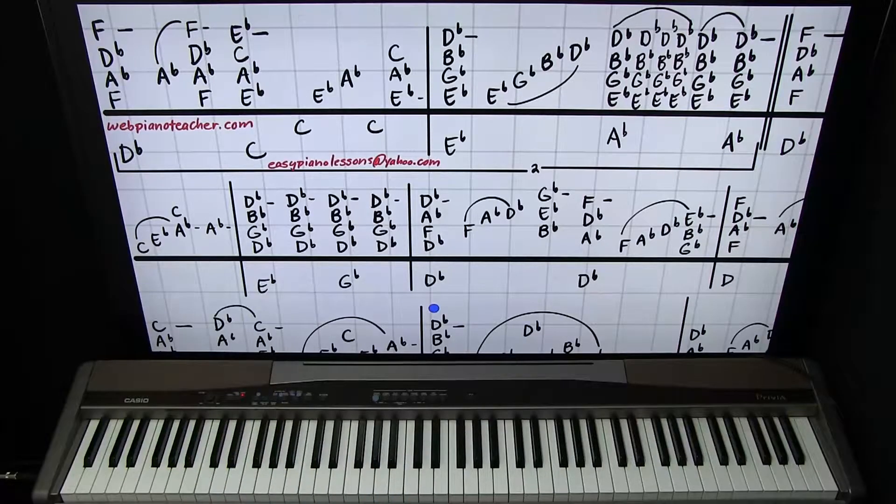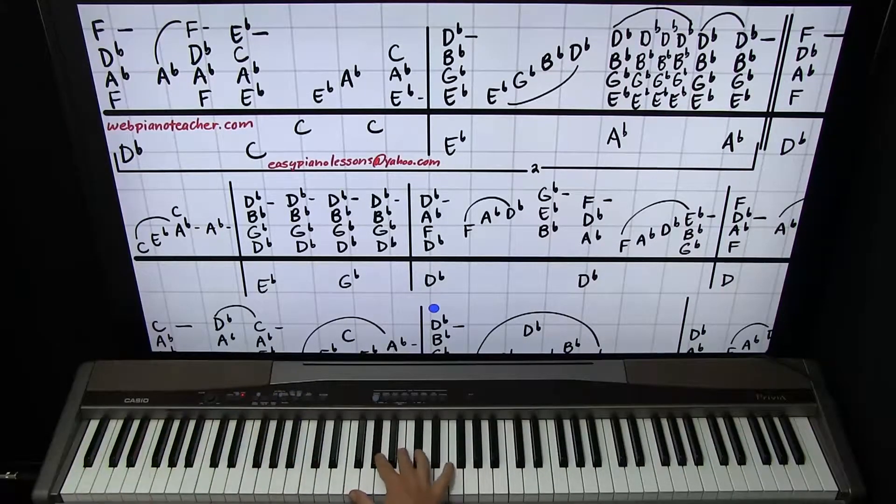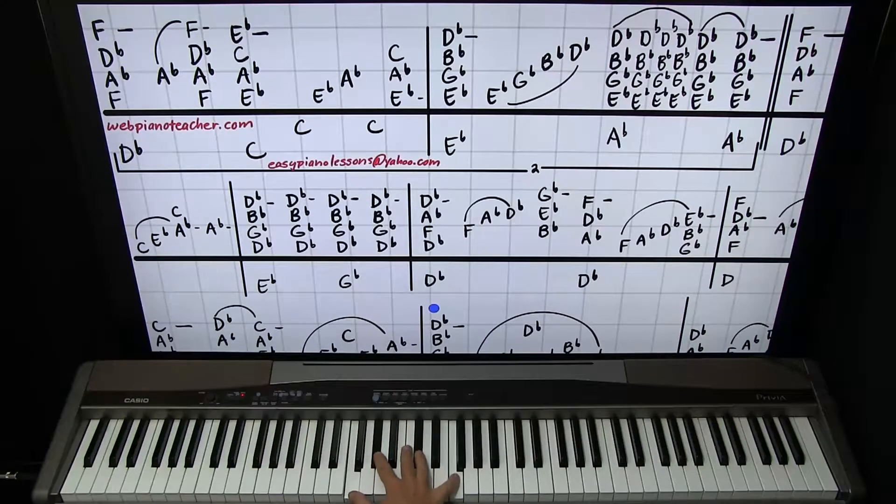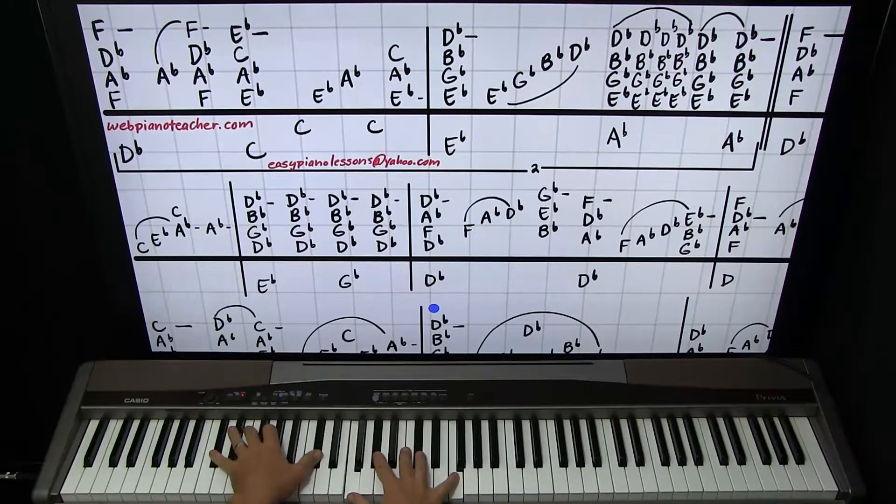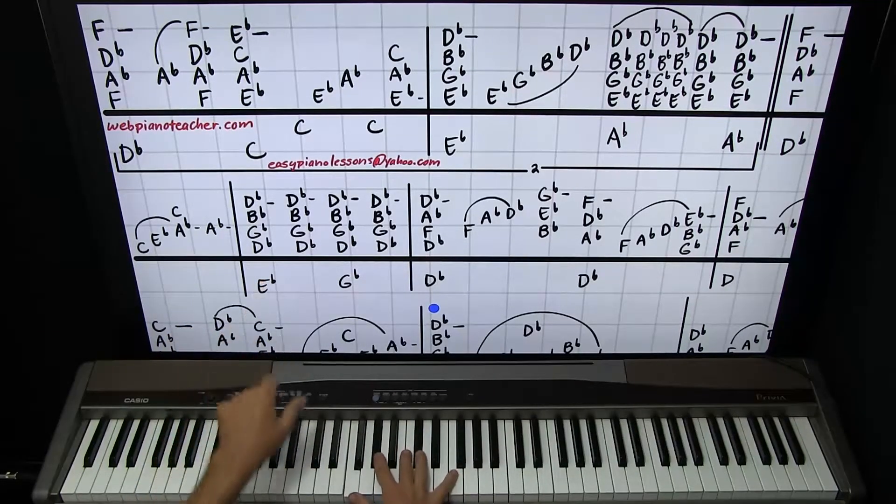Man, so many Elton John lessons on the site now. Here's one more. F, A flat, D flat, F on the right. I'll use one, two, four, five. Left hand on a D flat. Then the same chord. Just go.